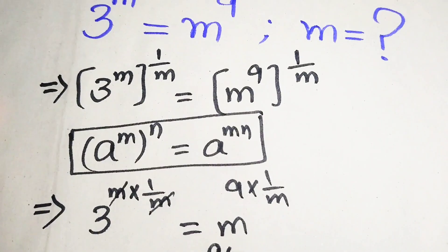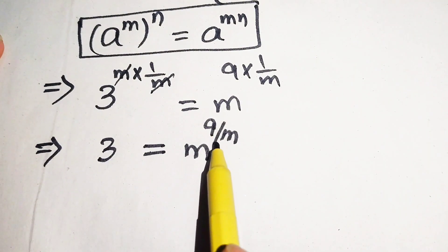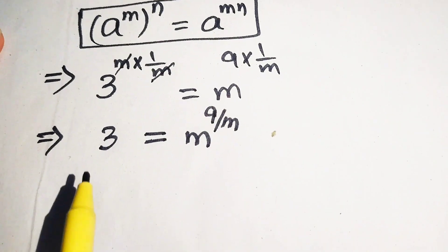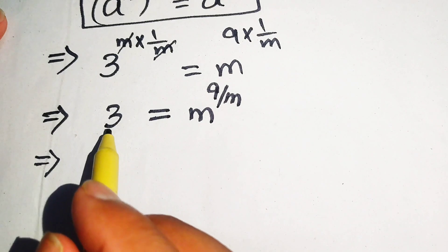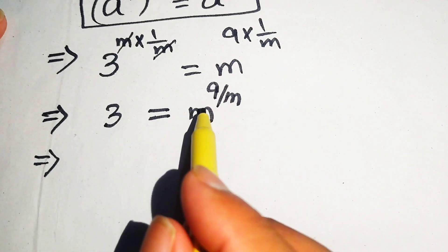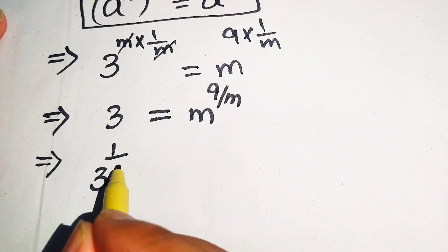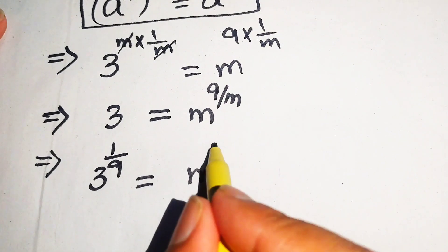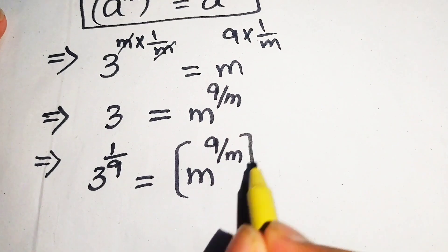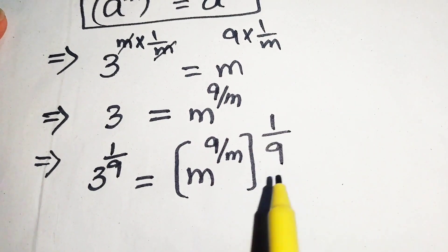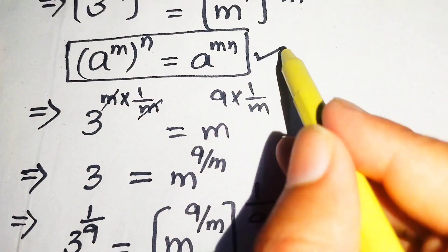In the first step we moved the unknown term to the right hand side. Now we move the constant term to the left hand side. To do this, we take the 9th root on both sides, writing it as 3^(1/9) = (m^(9/m))^(1/9). We again apply the exponential law.